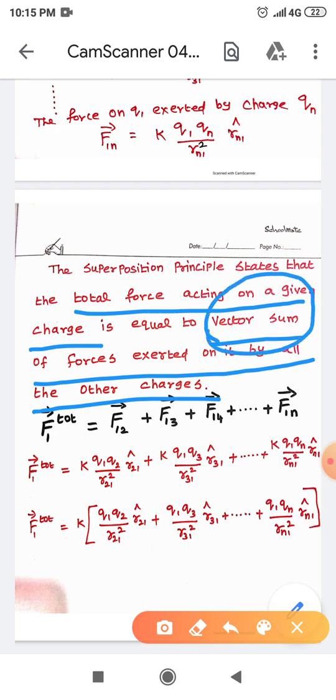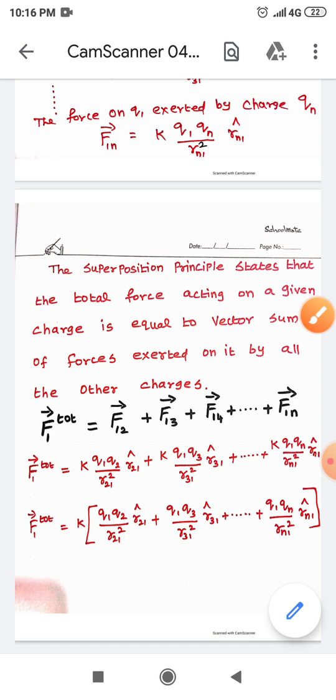Vector addition in the sense, in 11th standard itself, you have studied that in vector addition, there will be i-th component, j-th component, k-th component. So you have to add one i-th component with another i-th component, one j-th component with another j-th component. That is called a vectorial sum. Here you have to perform the vectorial sum only.